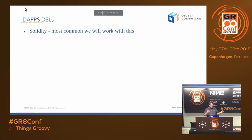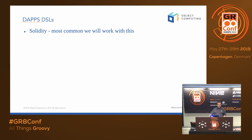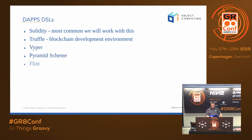To write a dApp you've got to use some sort of DSL, otherwise you'd be writing bytecode. There isn't any popular Groovy DSL for these. The most common one is Solidity. There's also Truffle, Viper, Pyramid Scheme, Flint, 4Ls, EVM Assembly, and Bamboo — these are all relatively popular ones, with Solidity way out in front.